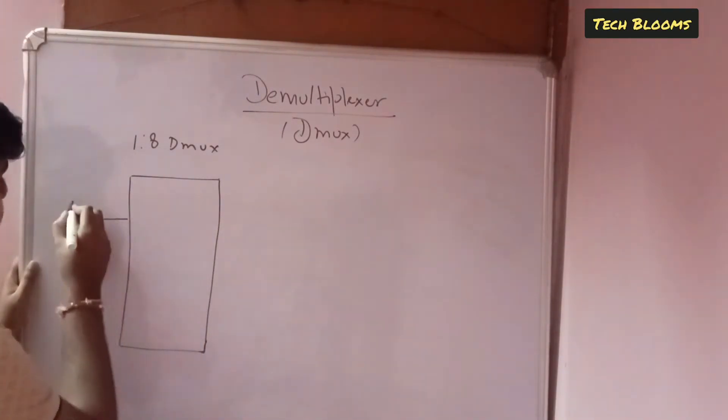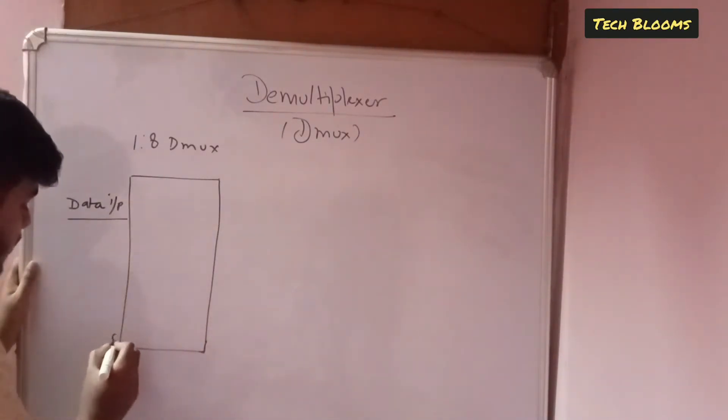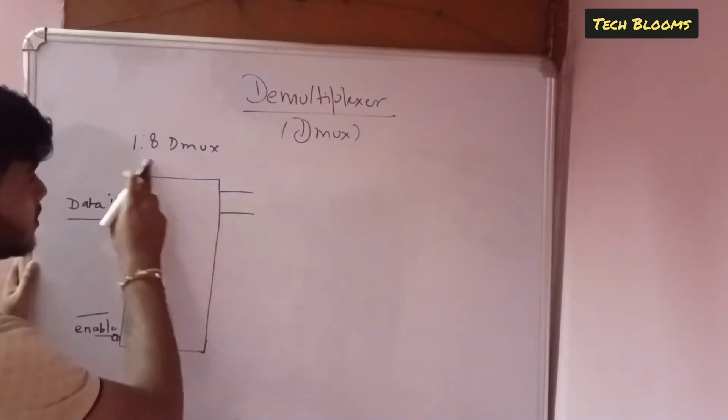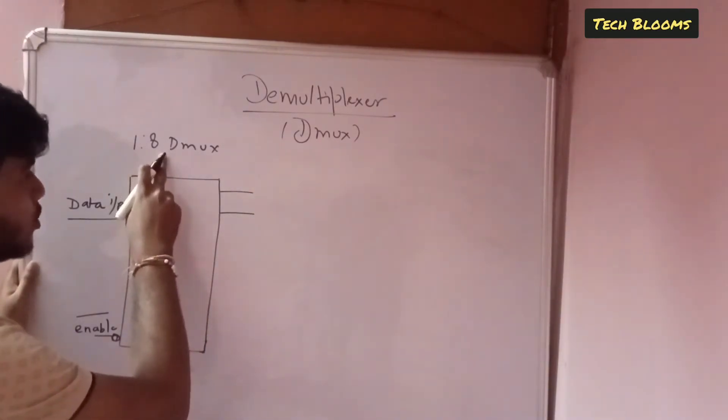So we have a data input and we have the enable pin and we have the select lines and we have the output lines. So since it is 1 is to 8 mux we will have 8 output lines.